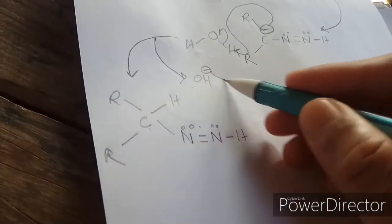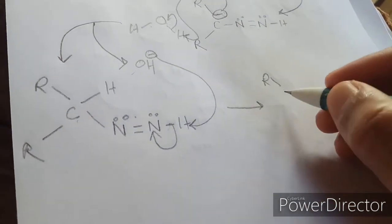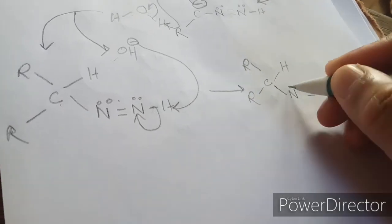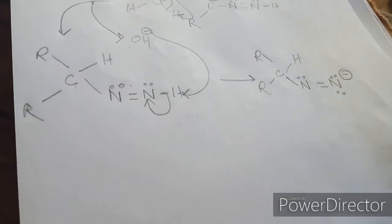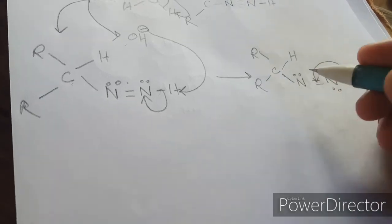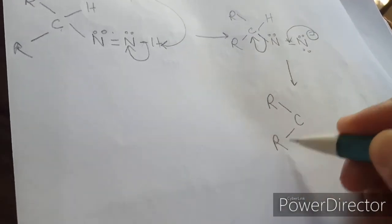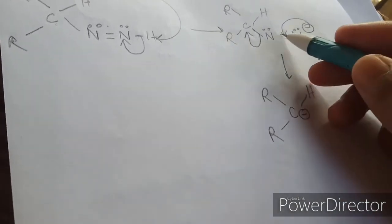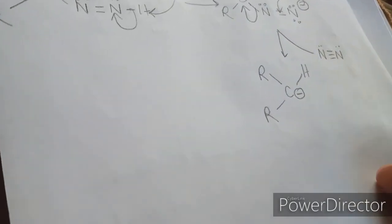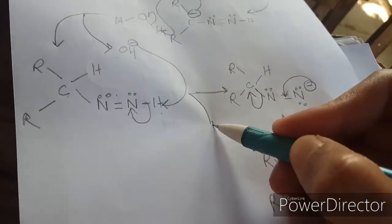Again, this OH will attack this hydrogen, and the bond will shift. So it gives R-C(R)(H)-N=N with a negative charge. Then the N₂ triple bond nitrogen gas will be given off as N₂ gas, leaving a carbanion R-C(R)(H)⁻.